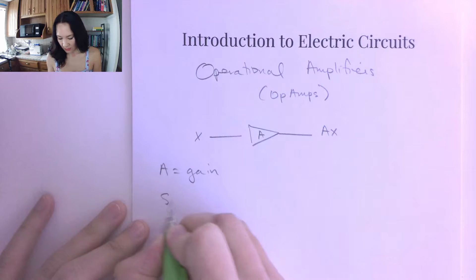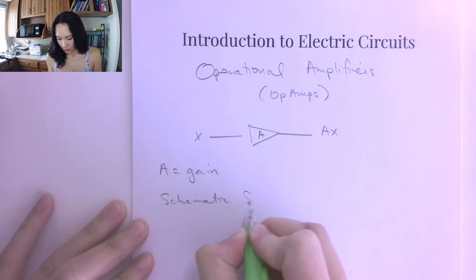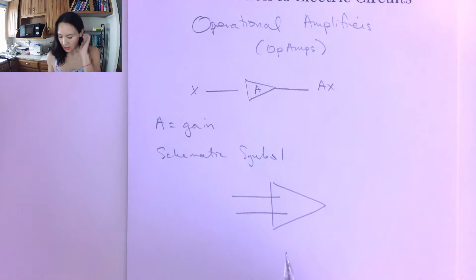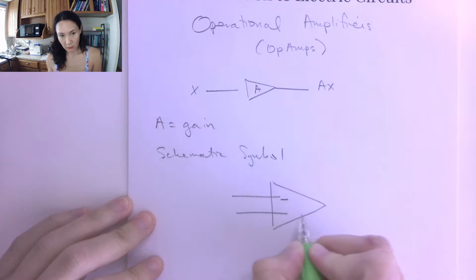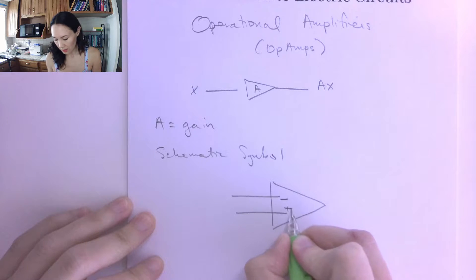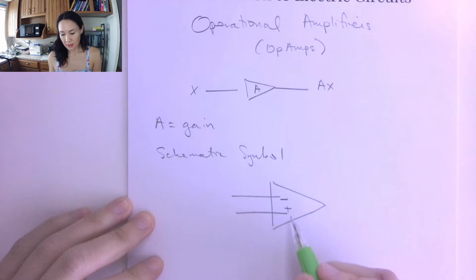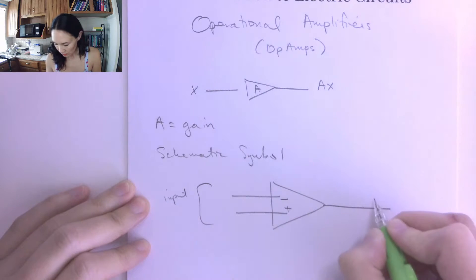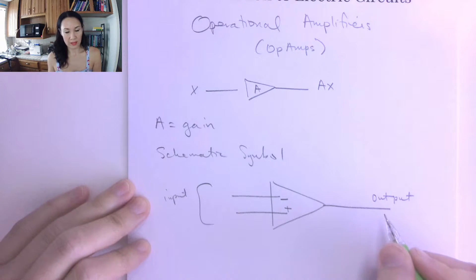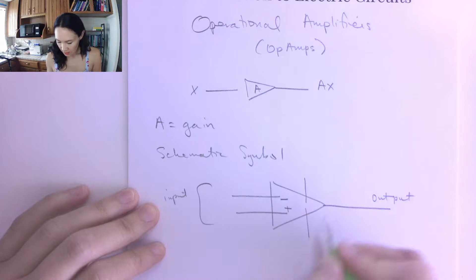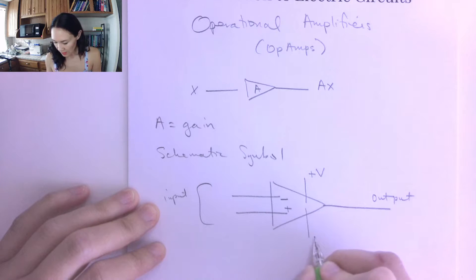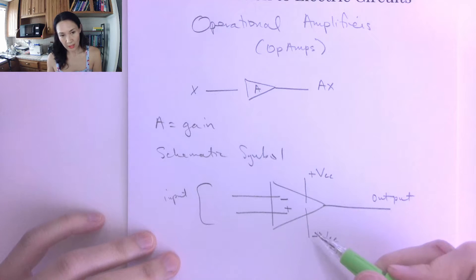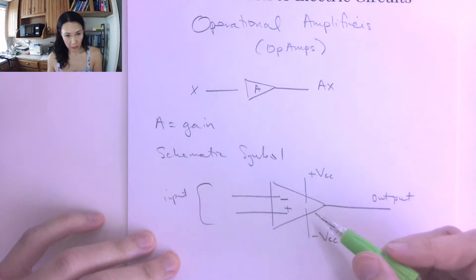The schematic symbol for the op amp is a triangle. There are inputs coming in on the left-hand side, and there are two types: an inverting input denoted with a minus, and a non-inverting input with a plus. Sometimes the plus is on top, sometimes the minus is on top. Coming out of the triangle is the output — the amplified signal. On the top and bottom of the op amp you'll also see a plus V and minus V, sometimes labeled as VCC and VCC minus. These are the power supply inputs — this is where you apply power to turn the op amp on; those signals don't get amplified.